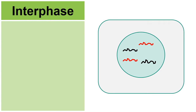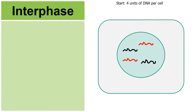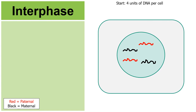Let's go through the cell cycle involving meiosis. In this animation, the cell is going to go through interphase and it's going to start with four pieces of DNA — two black and two red. The black DNA is maternal, meaning from one's mother, and the red is paternal, meaning from one's father.